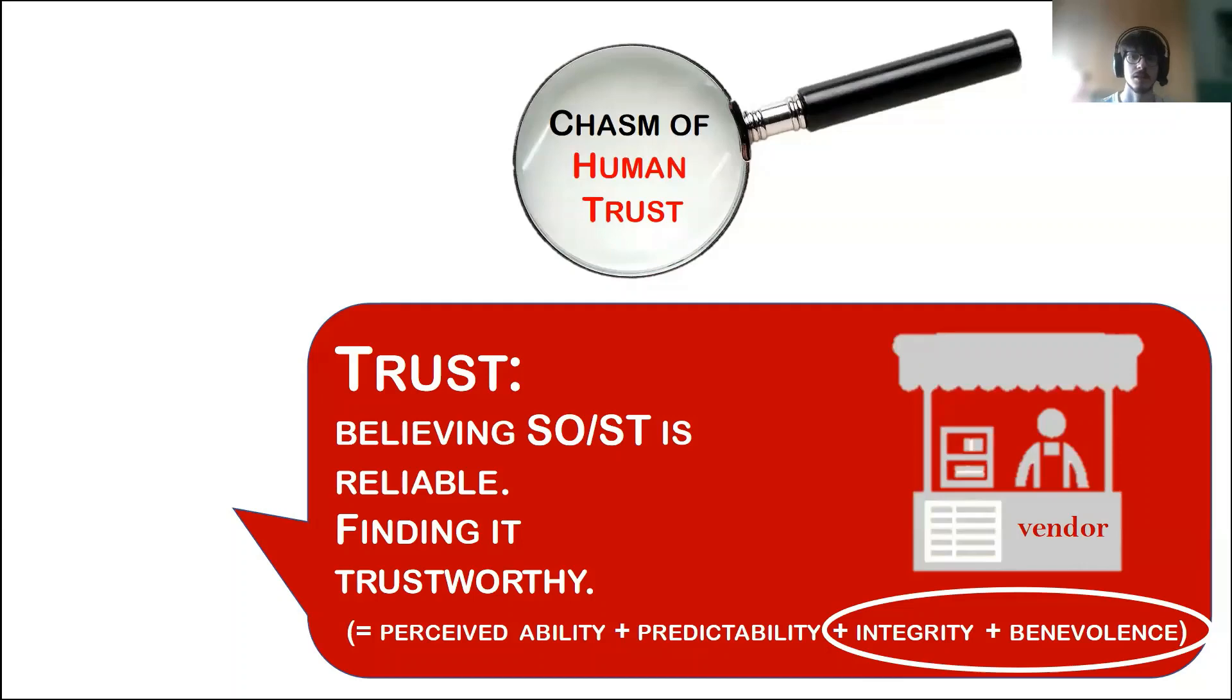Focusing more on this second kind of gap, it is important to underline that trust is a complex dimension which usually refers to the fact that the decision maker should find that the artificial intelligence system and the provider are to be considered reliable and trustworthy. In this sense, trust is a complex notion that can be considered as the composition of different properties. Some of them have the perceived ability of the artificial intelligence systems, its predictability, and also properties that regard the vendor, for example, its integrity or its benevolence.